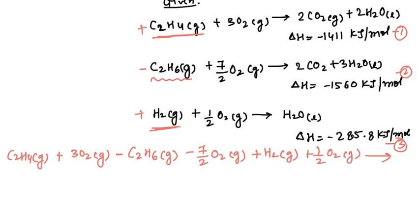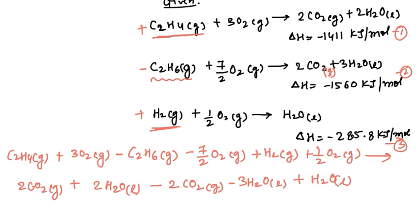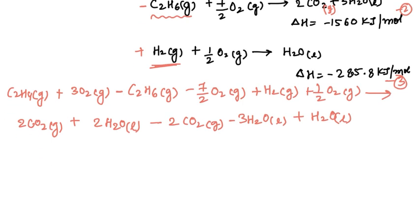That is 2 CO2 gaseous form plus 2 H2O liquid form minus 2 CO2 gaseous form, this is gaseous form, minus 3 H2O liquid form plus H2O liquid form. So can you simplify this and get the equation? Are we getting the same equation number 4? Let us just find out.